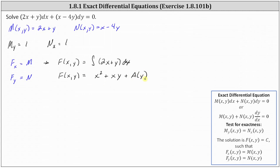Now we use the second equation to determine g(y). The partial of F with respect to y must equal N. If F equals x squared plus xy plus g(y), then the partial of F with respect to y equals the derivative of x squared with respect to y, which is zero, plus the derivative of xy with respect to y, which is x, plus g prime of y. And this must equal N, which is x minus 4y.